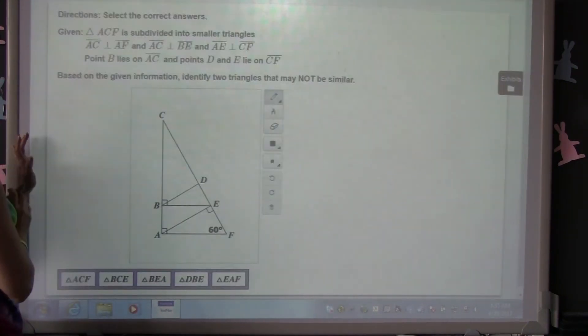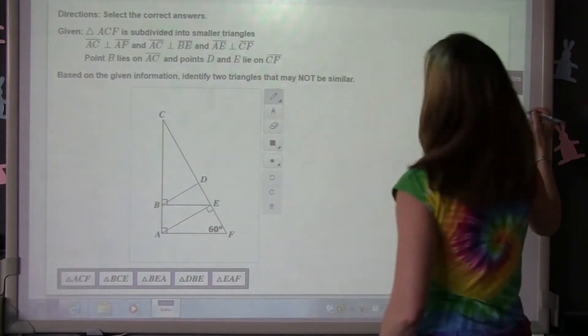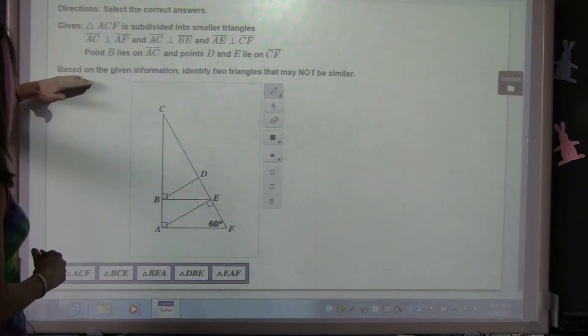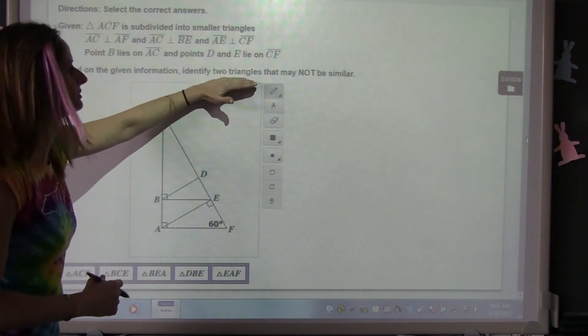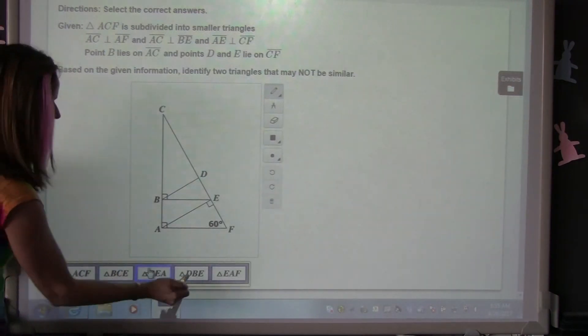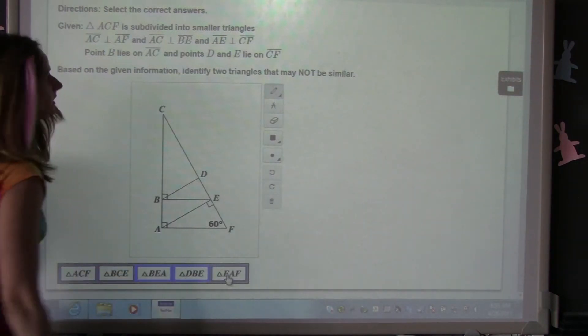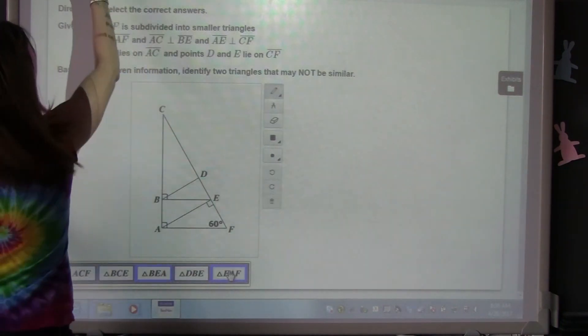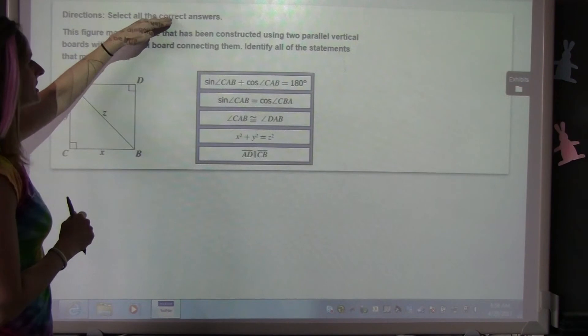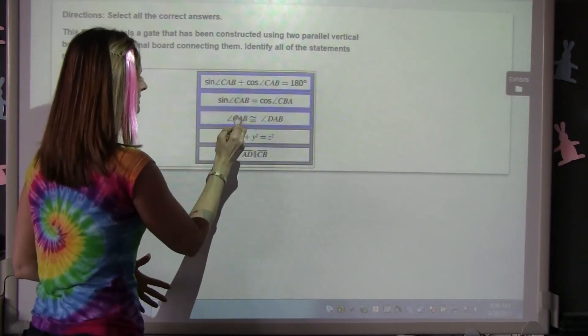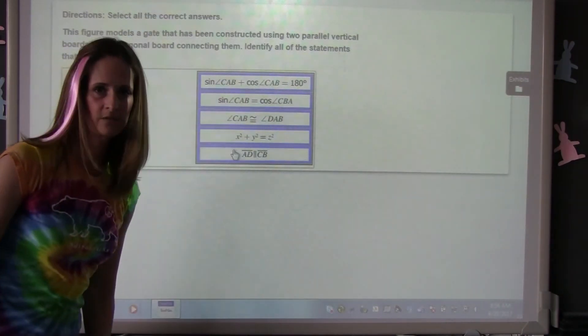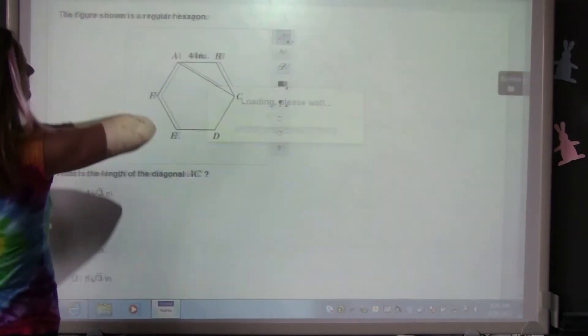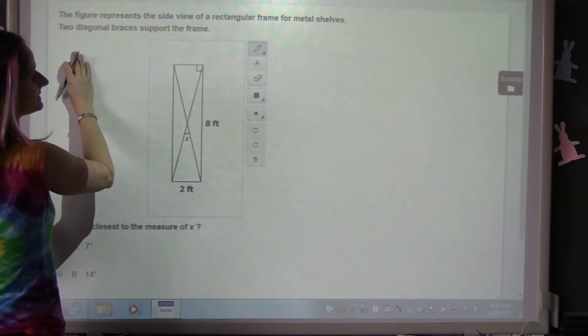This question here, this is number 12. The directions say select the correct answers. Then down here it says based on the given information, identify the two triangles that may not be similar. So you can only select two answers. If you want to select a third, it won't let you. You have to unselect something and then select something else. But this one, same directions, but then it doesn't tell you how many answers you have. So in theory you can select all those answers if you wanted to. That's not right, but it doesn't tell you how many to select. So some tell you how many answers there are and some don't.